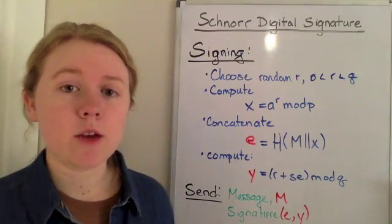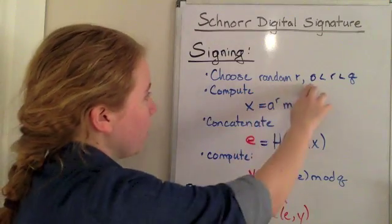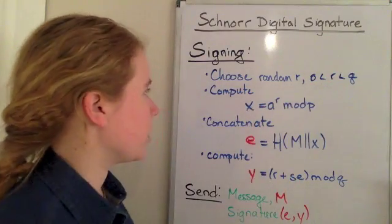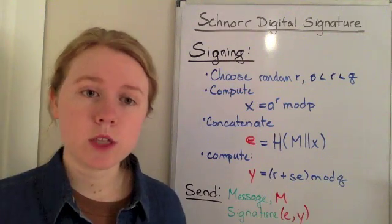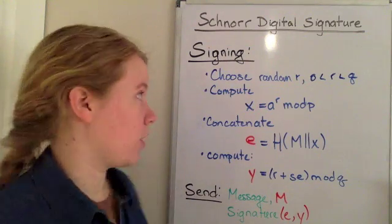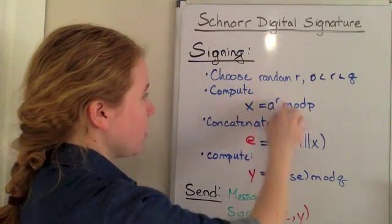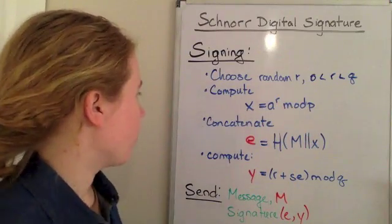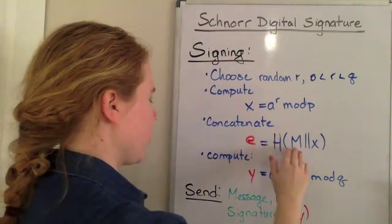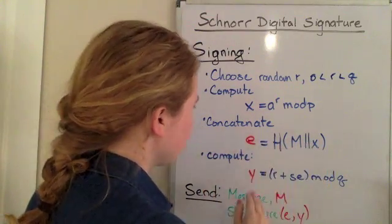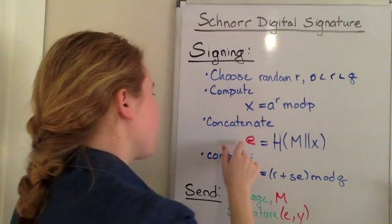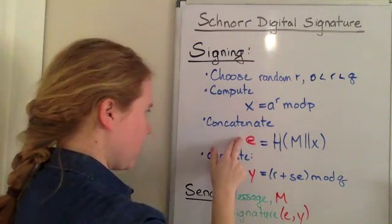In order to sign, we have to choose a random r that is in between 0 and q. We then want to use that r to compute an x value, where x is a to the r mod p. We then want to concatenate with the message with x and the hash, and we get this value e right here.